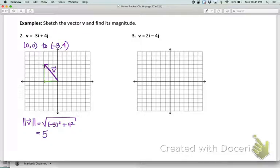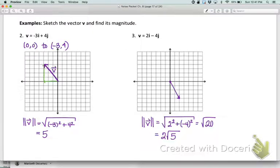Go ahead and pause for a moment. In about 5 seconds, I'm going to put up the answer for number 3. This is what you should get. This means our terminal point is at (2, -4), so that's where our arrow lands. Then using the Pythagorean theorem, we get the magnitude which simplifies to 2√5.